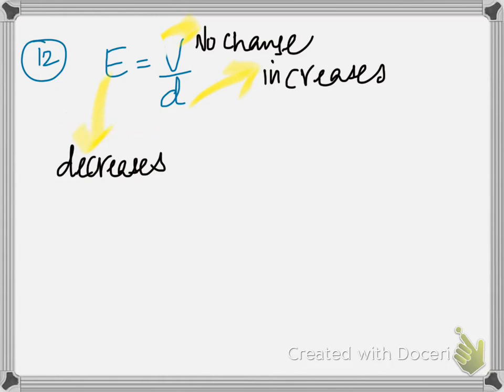Now the question here is about the potential difference. Well, I was looking at question 13 and trying to explain it. Now this is actually question 12, so going back over it again, intensity of electric field is given by this formula. When D increases with no change in voltage, question says constant voltage, surely the intensity, which is strength of the electric field, decreases.